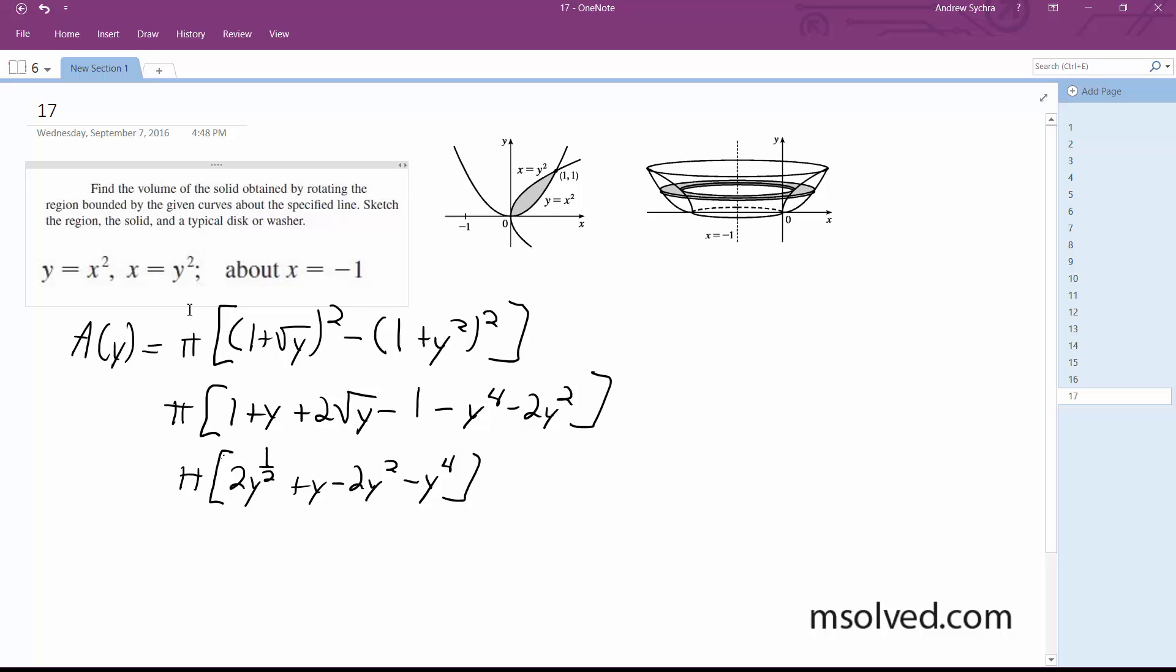Okay integrating this. So we're going to take it from 0 to 1. (4/3)y^(3/2) + y²/2 - (2/3)y³ - y⁵/5.